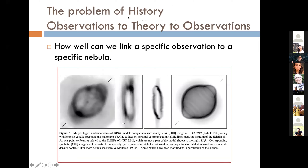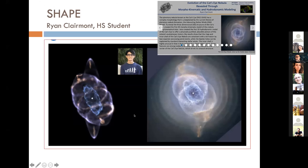The problem of history is always making that link for a specific object — how well can we link a specific observation to a specific model nebula? This is from the paper and goes way back — this was work that Harold Mellema and I did, where there was an object, we ran a model, we made a synthetic observation, and it came out okay. Now we're at the point — this is a success — there's this remarkable model made of the Cat's Eye, done by a high school student using SHAPE, who ran the hydro model in SHAPE. This is really an indication of how far we've come from that first work that Harold and I did with Bruce Ballack and Vincent Icke as our guides.